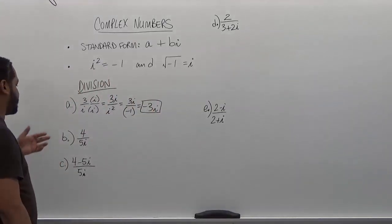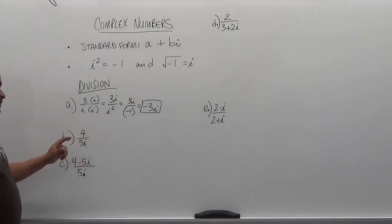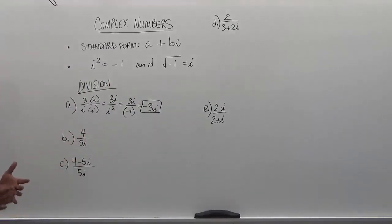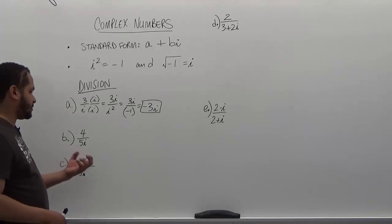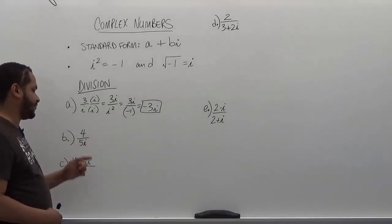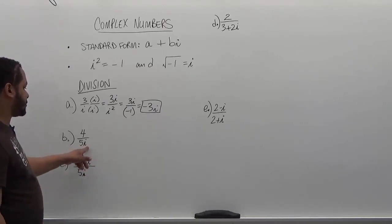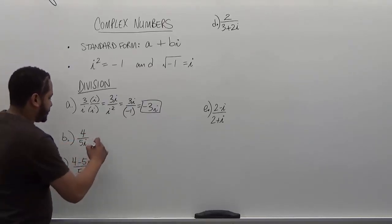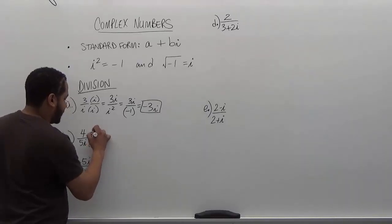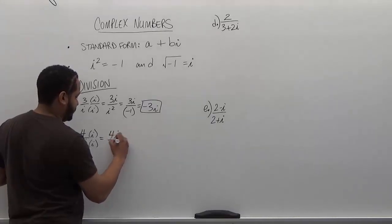Now let's move on to the second problem. We have four divided by 5i. To divide this problem, we just want to multiply the top and bottom by the i term, because to get rid of the i from the denominator, we just have to multiply top and bottom by i. This gives us 4i on top, and on the bottom we get 5i².